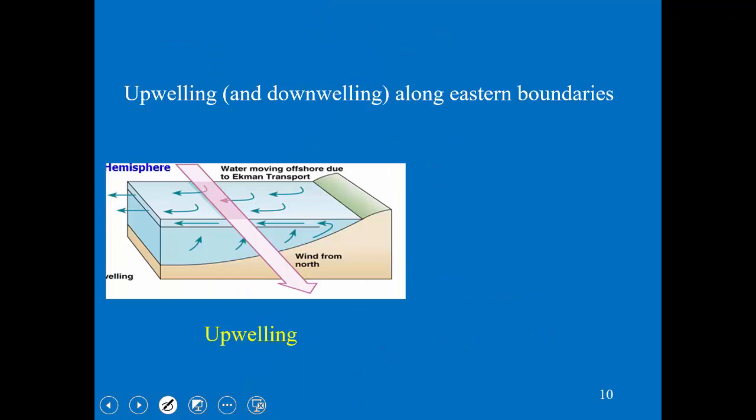As I mentioned, upwelling and also the opposite phenomenon — downwelling — is much more prevalent and important along the west coast of our country and along the west coast of South America. Oceanographers often talk about these as eastern boundaries, because from an ocean perspective those upwelling events are happening on the east of that ocean — our west coast. The same processes are working, but the wind has to go from the northwest to the southeast to get that same movement of water by Ekman transport.